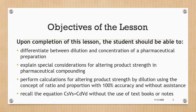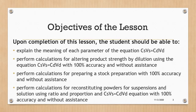We will also examine a very useful equation commonly called the C1S1=C2S2 equation and explore how best to use it to determine the ingredients needed to alter concentration. Additionally, we'll look at reconstitution, which also involves diluting a present concentration.